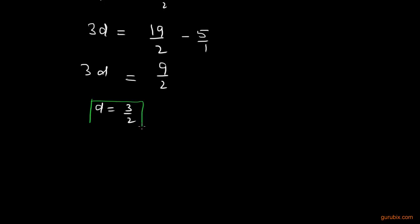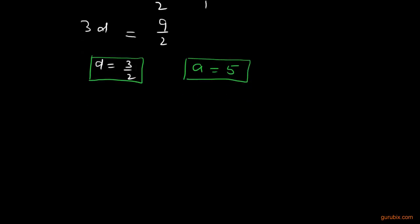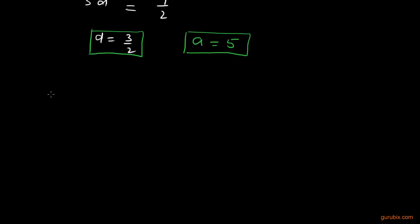This is the value of d and a is equal to 5 is given to us. So now we can easily calculate the desired terms, which is the second term. We know that the second term equals a plus d. So therefore 5 plus 3 over 2, this means 13 over 2. This means you can write it as 6½. This is what to fill in the first box.